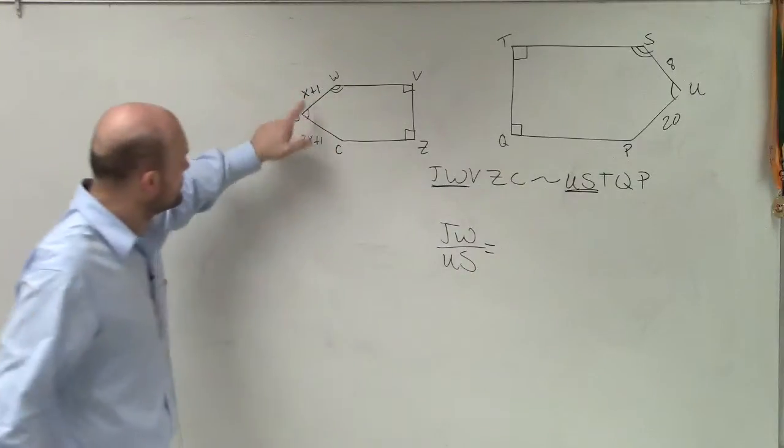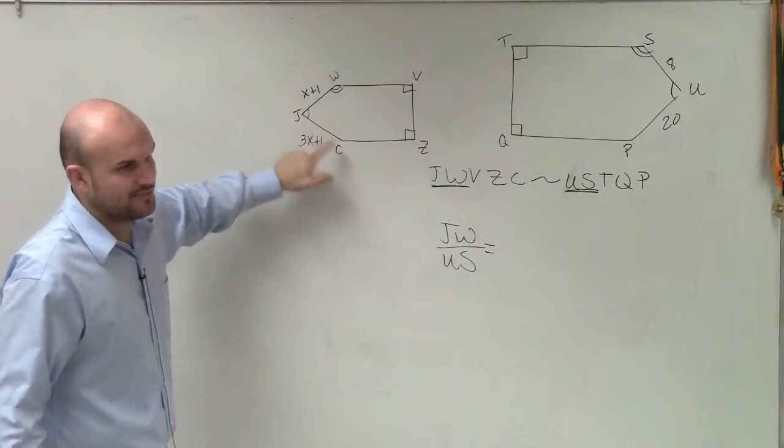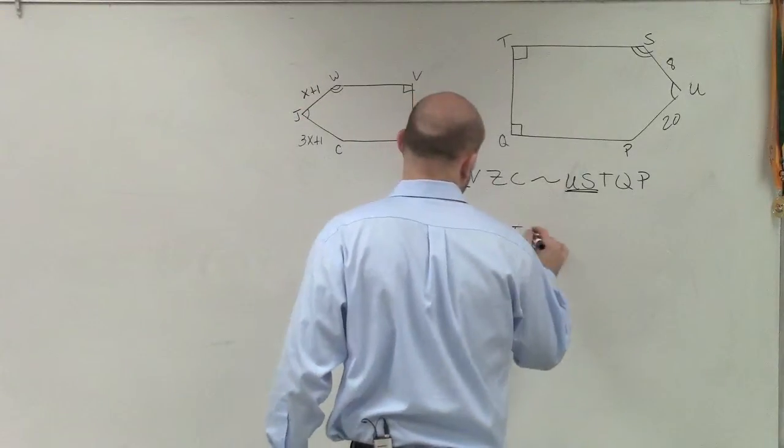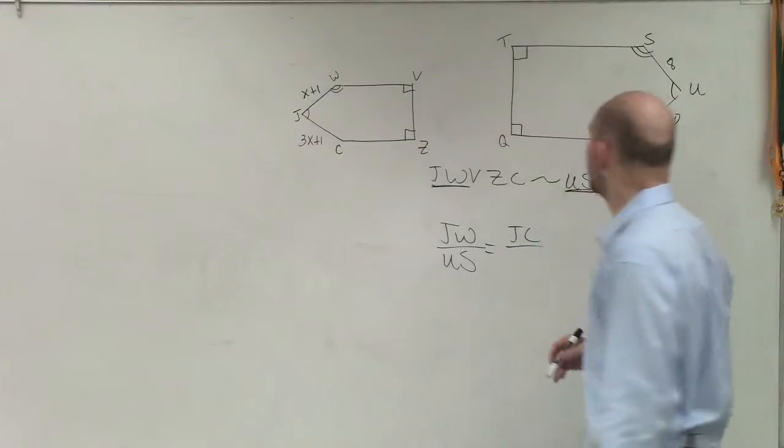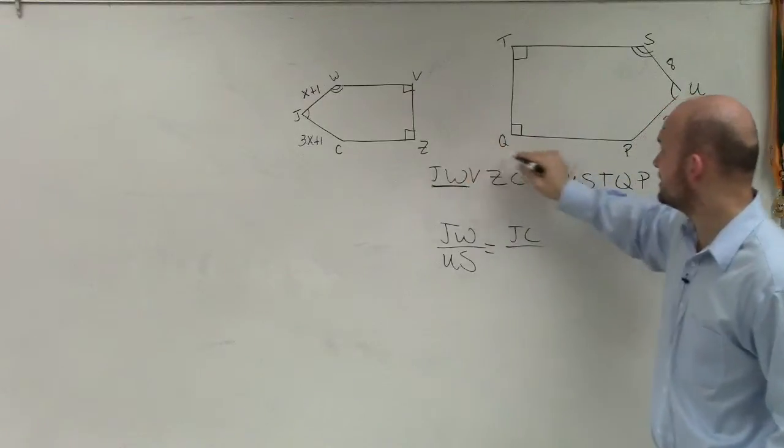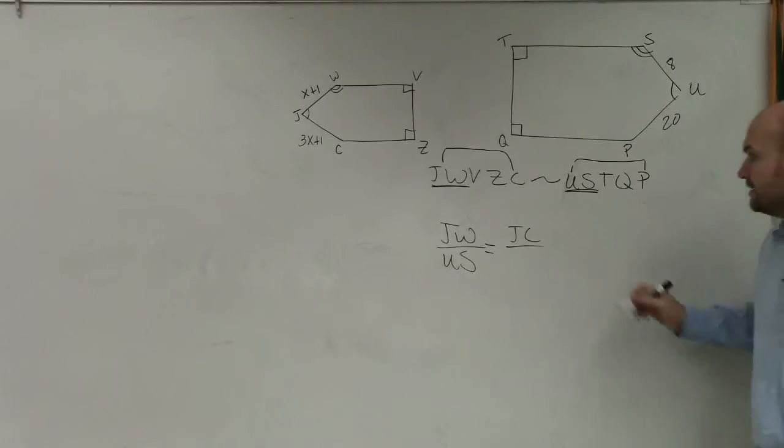But let's go and find another one that we can set a proportion, because once we have a proportion, we can solve. So I also notice here, I have one, which I could call that JC, right, which gives you 3C. So JC is similar to what other side over here? U, T, U, U, P. Right. Think about it this way. J, C, right, J to C is the same as U to P, all right?